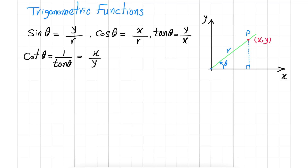Secant of theta, which is the inverse of cosine of theta, is 1 over (X/R), which is going to be R over X.